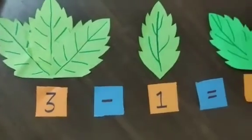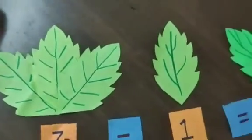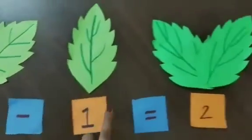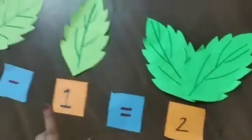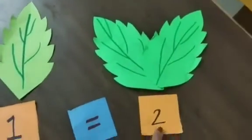So children, did you understand? We had 3 leaves. I took away 1 and we are left with 2. 3 minus 1 equals to 2.